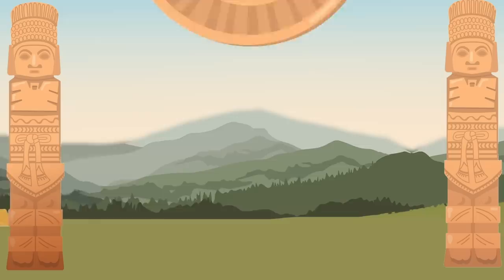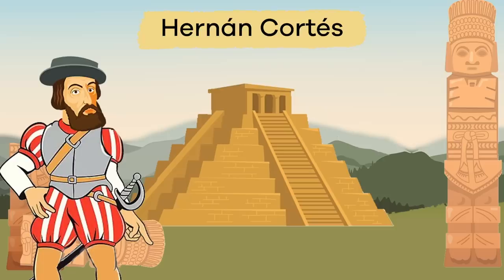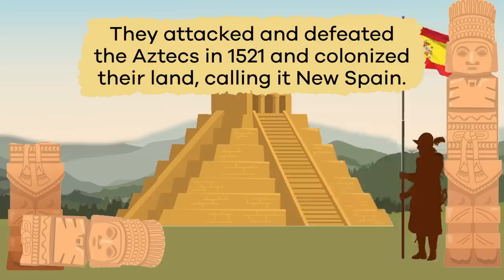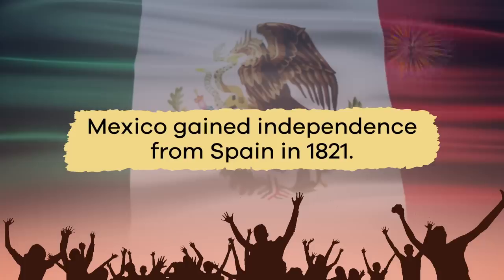The middle period began in 1519 with the arrival of Spanish invaders known as conquistadors — Spanish for 'conquerors.' Led by Hernán Cortez, they attacked and defeated the Aztecs in 1521, colonized their land calling it New Spain, brought new diseases, and enslaved many indigenous people.